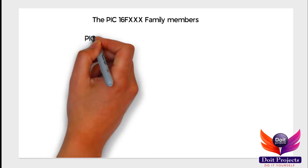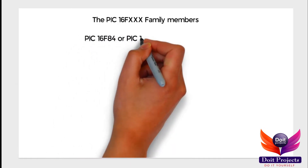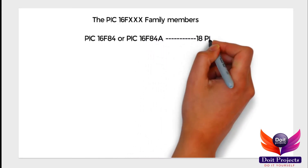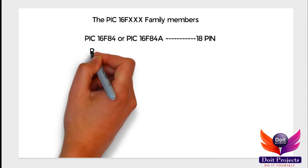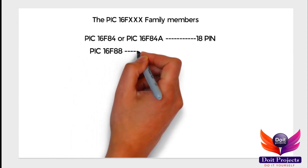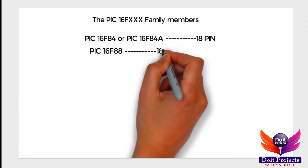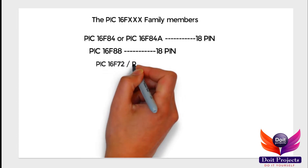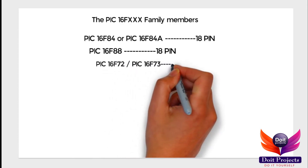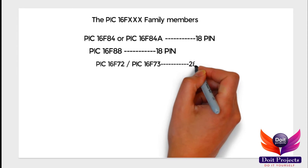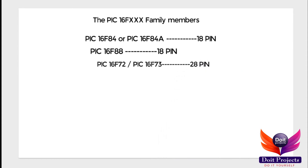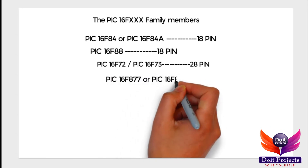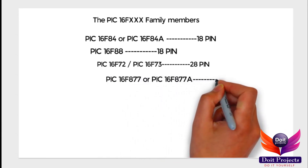The first IC is PIC 16F84 or PIC 16F84A, and this kind of IC has 18 pins. The second one is PIC 16F88, which also has 18 pins. The third one is PIC 16F72 or 16F73, which has 28 pins. The fourth IC is PIC 16F877 or PIC 16F877A, and this IC has 40 pins.